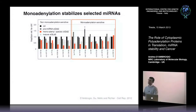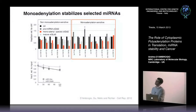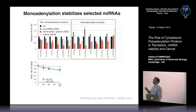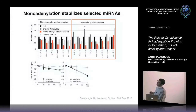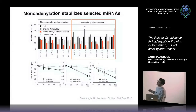To prove this is due to the post-transcriptional event of monoadenylation and increased stability, I measured stability of one non-monoadenylation-sensitive microRNA and two monoadenylation-sensitive ones. miR-134a doesn't really change if an A is appended, but miR-145 is unstable and gets stabilized by one A addition. The same happens for let-7d — it is unstable and gets stabilized by monoadenylation.